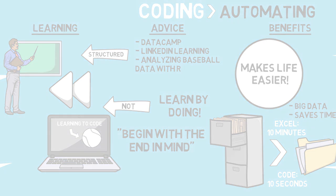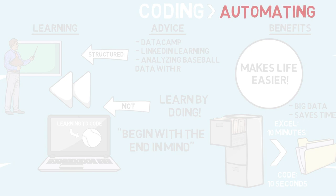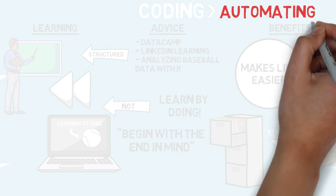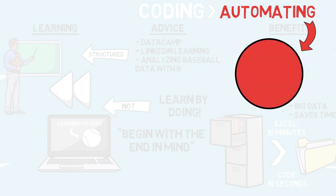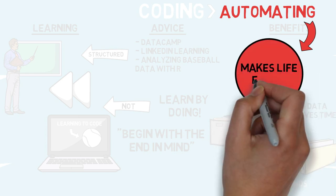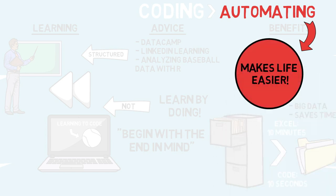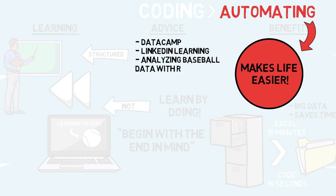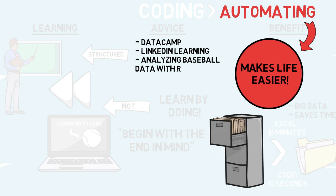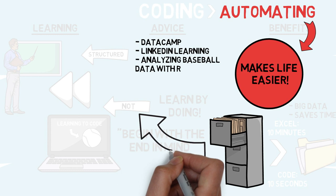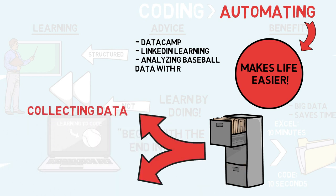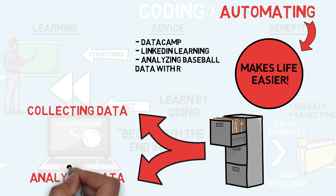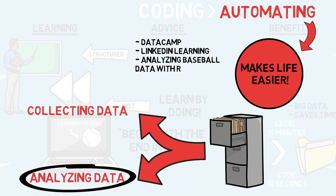Let me recap my main takeaways. Coding is simply creating automation among the processes that you already have in place as an organization. At the end of the day, it's about making your life easier in the long run. As teams begin to collect more and more data, it becomes even more beneficial to have a systematic process for collecting and analyzing that information — and the more time you can spend analyzing that information, the better.